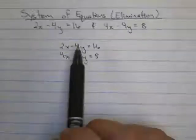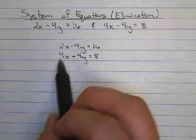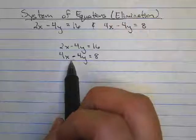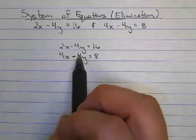Well if I added this as it currently is I'd have 6x and I'd have a negative 8y. So what I need to do is manipulate one of the equations so that they have opposite but the same number as the coefficient.